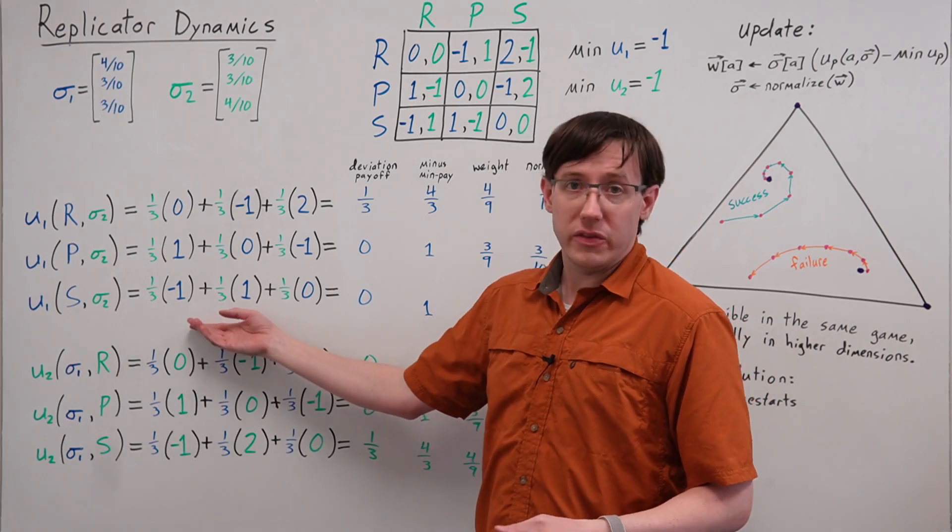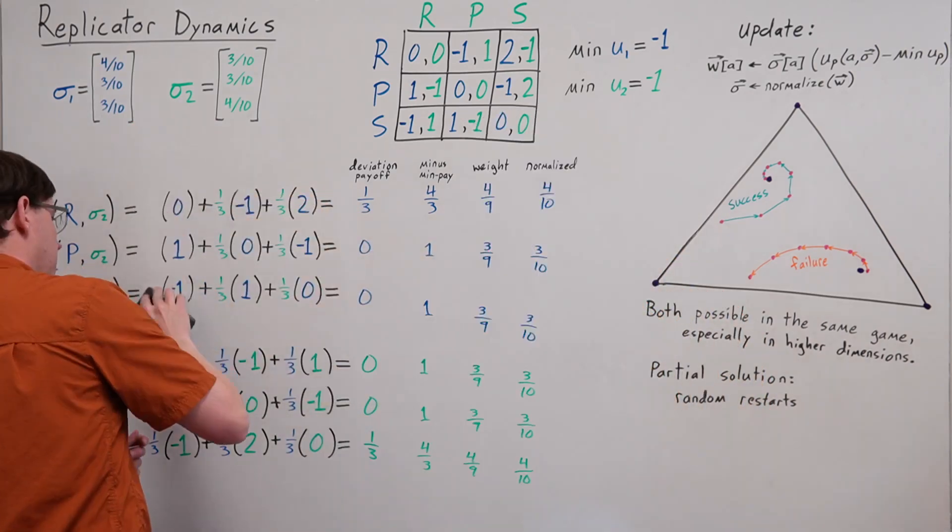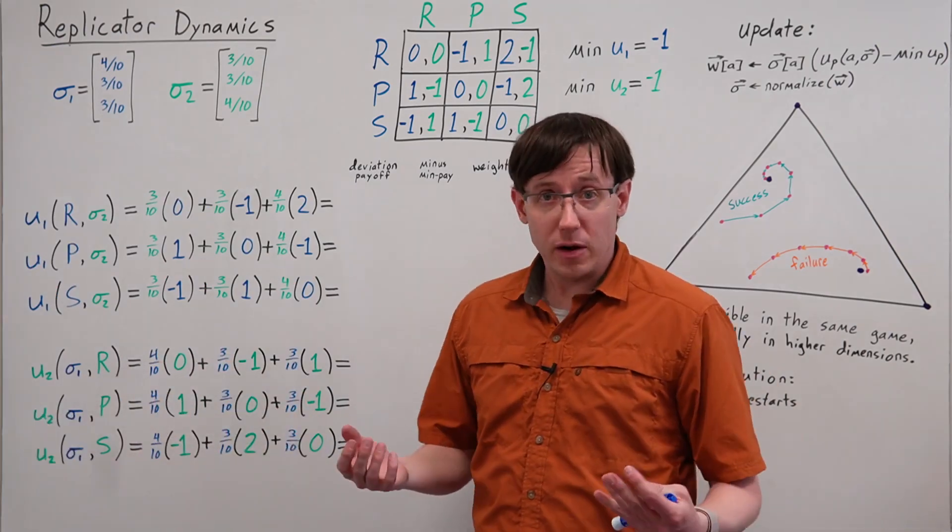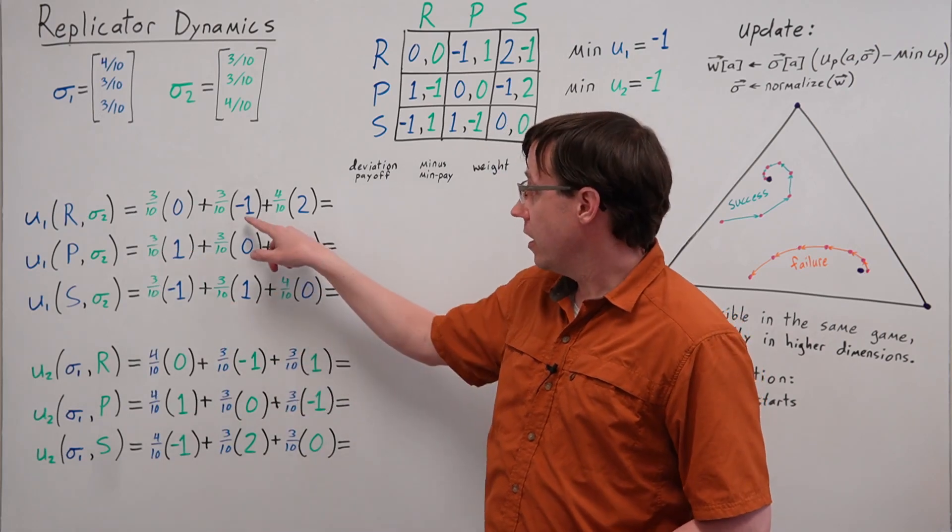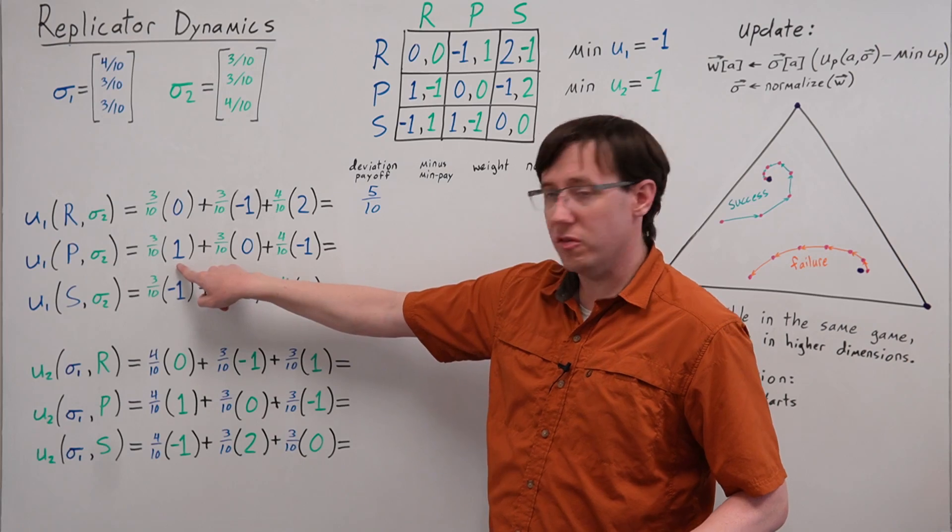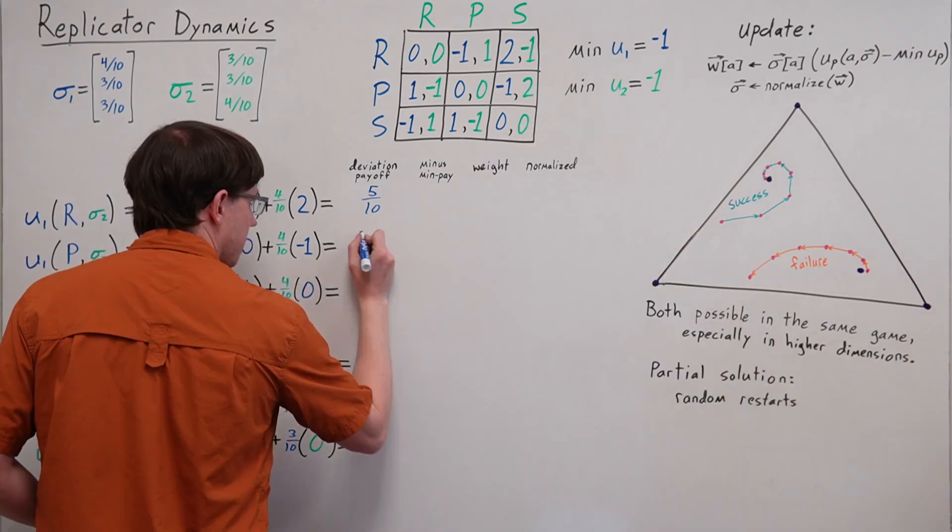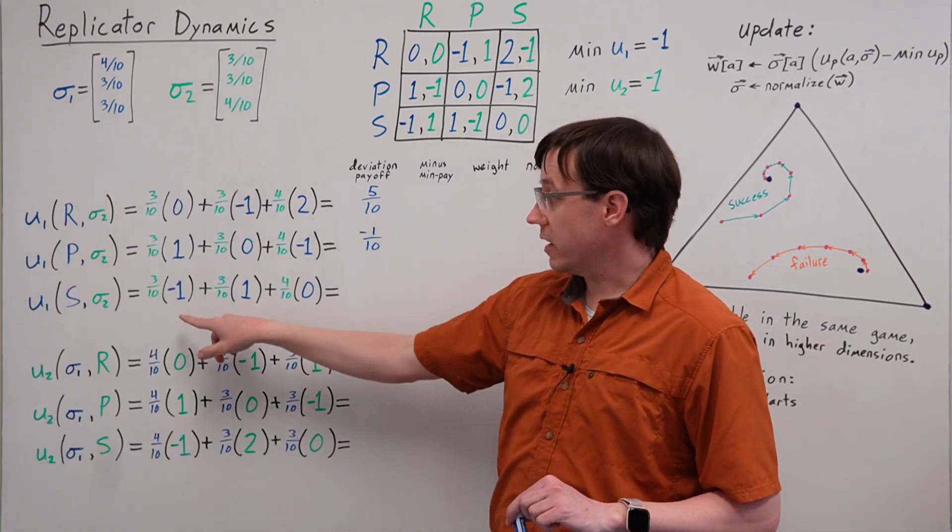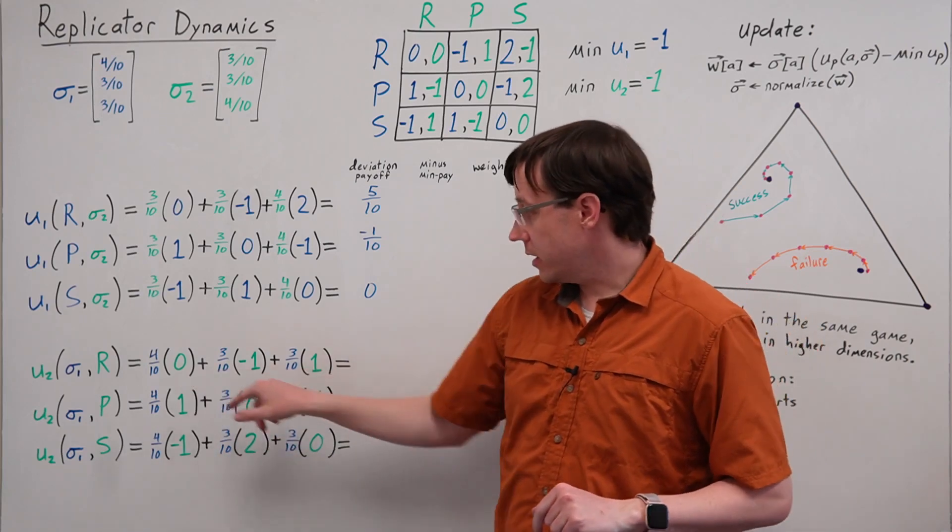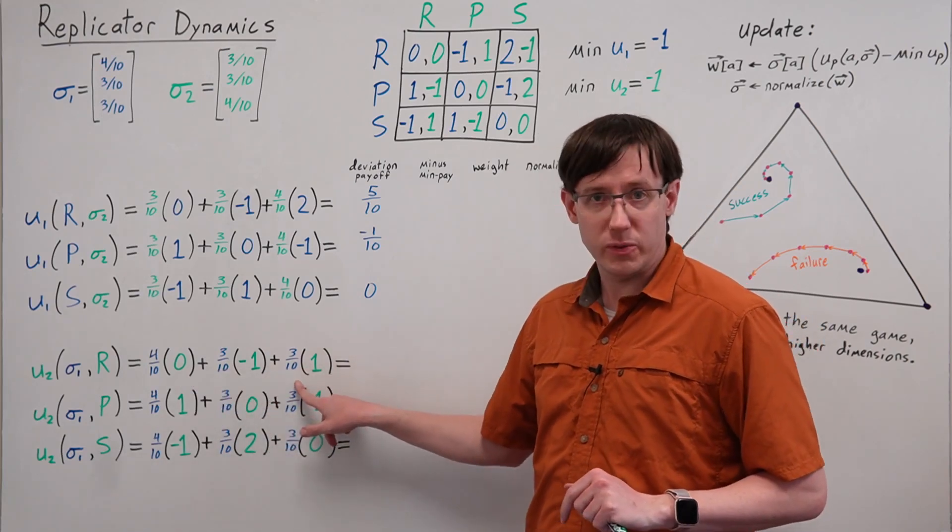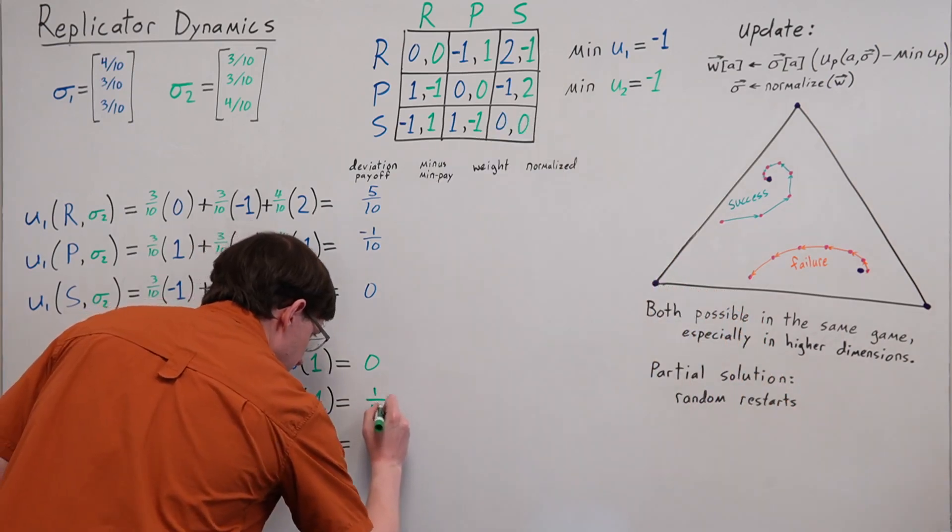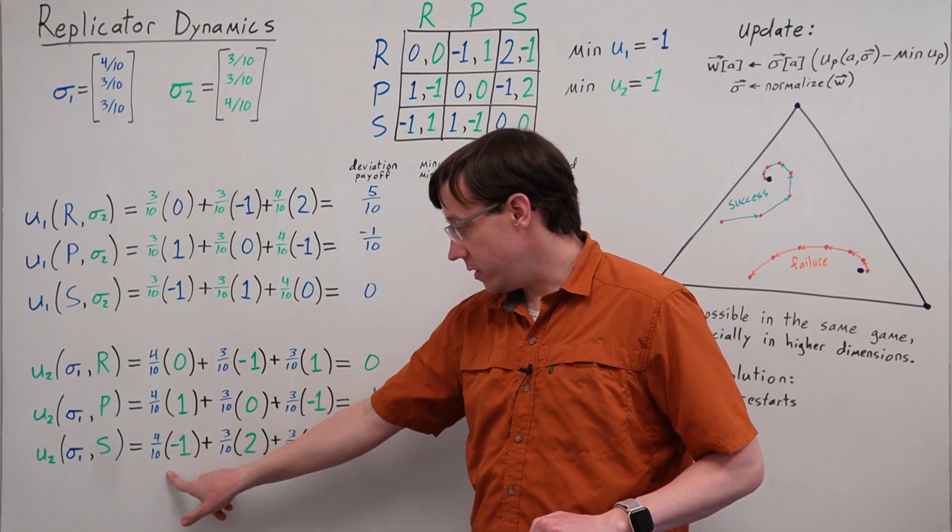This means we'll need to recalculate the deviation payoffs under this new profile. For player 1, playing rock gives an expected utility of minus three-tenths plus eight-tenths, playing paper gives an expected utility of plus three-tenths minus four-tenths, and playing scissors gives an expected utility of minus three-tenths plus three-tenths. For player 2, rock gives an expected utility of minus three-tenths plus three-tenths, paper gives an expected utility of plus four-tenths minus three-tenths, and scissors gives a deviation payoff of minus four-tenths plus six-tenths.